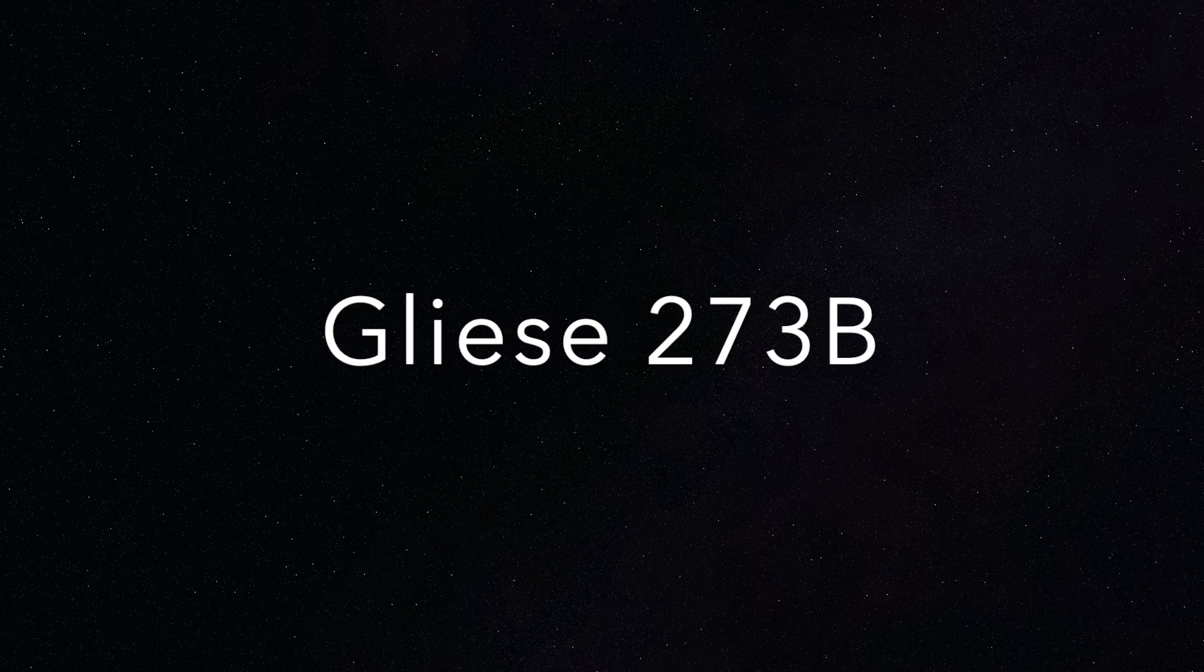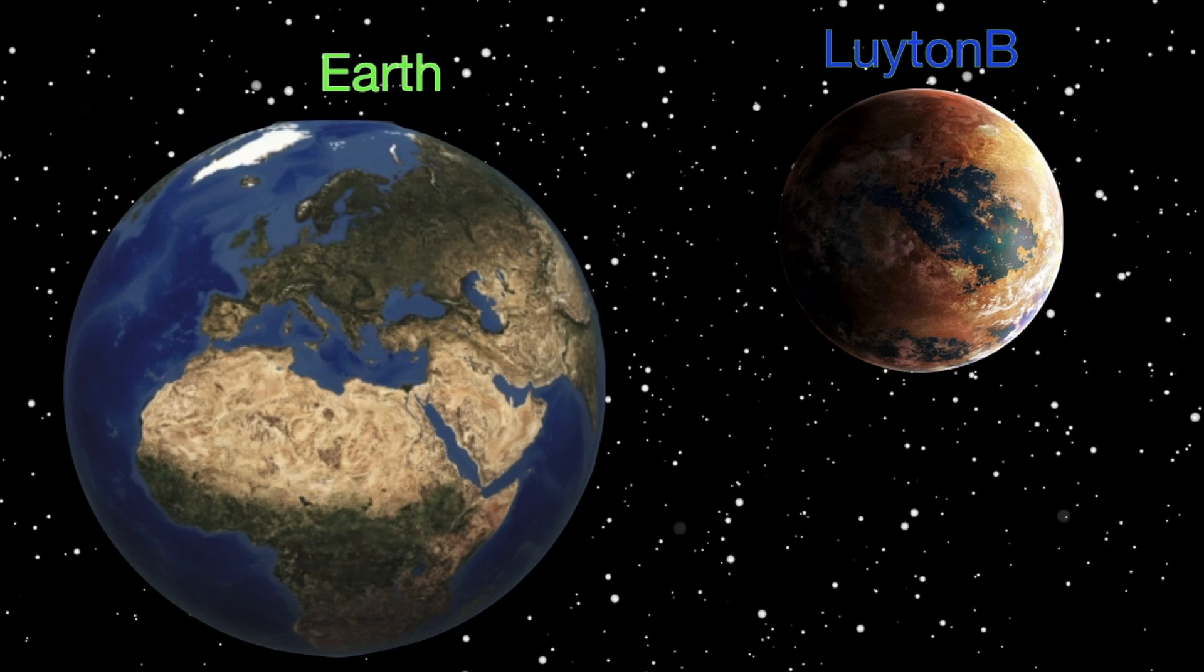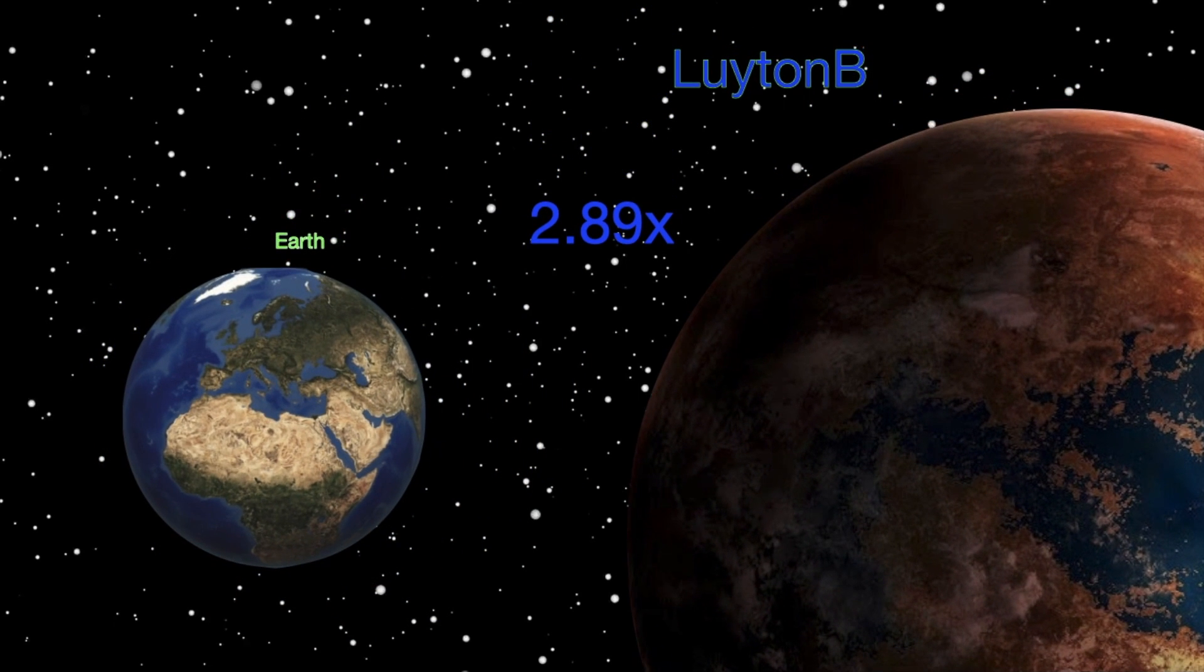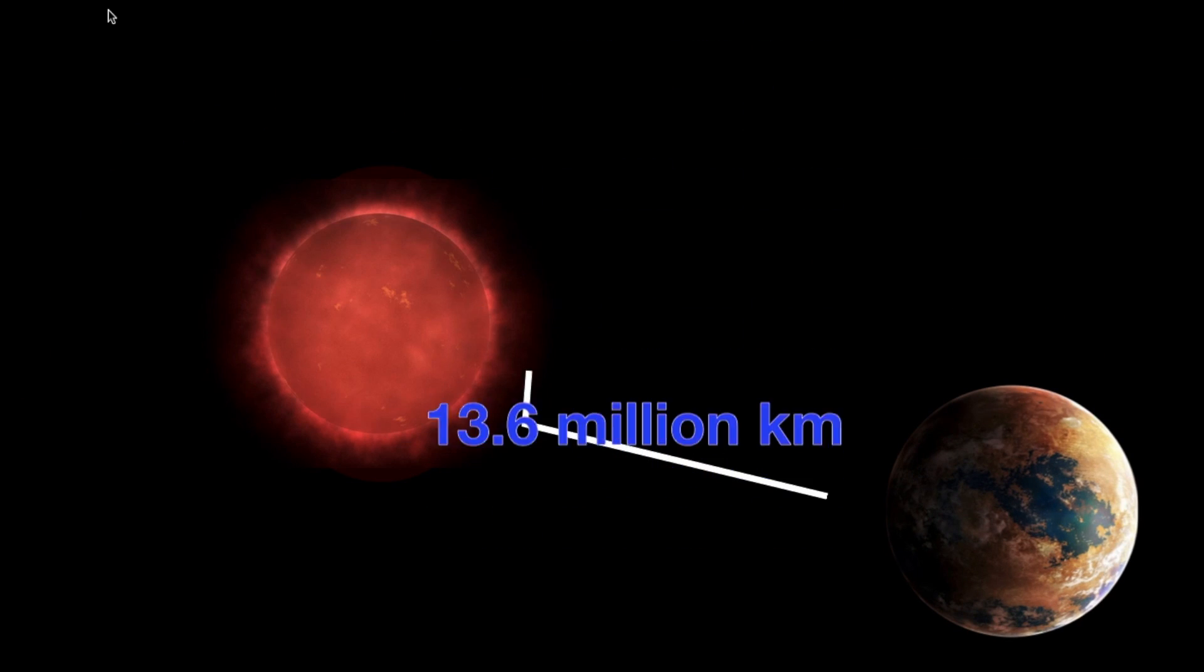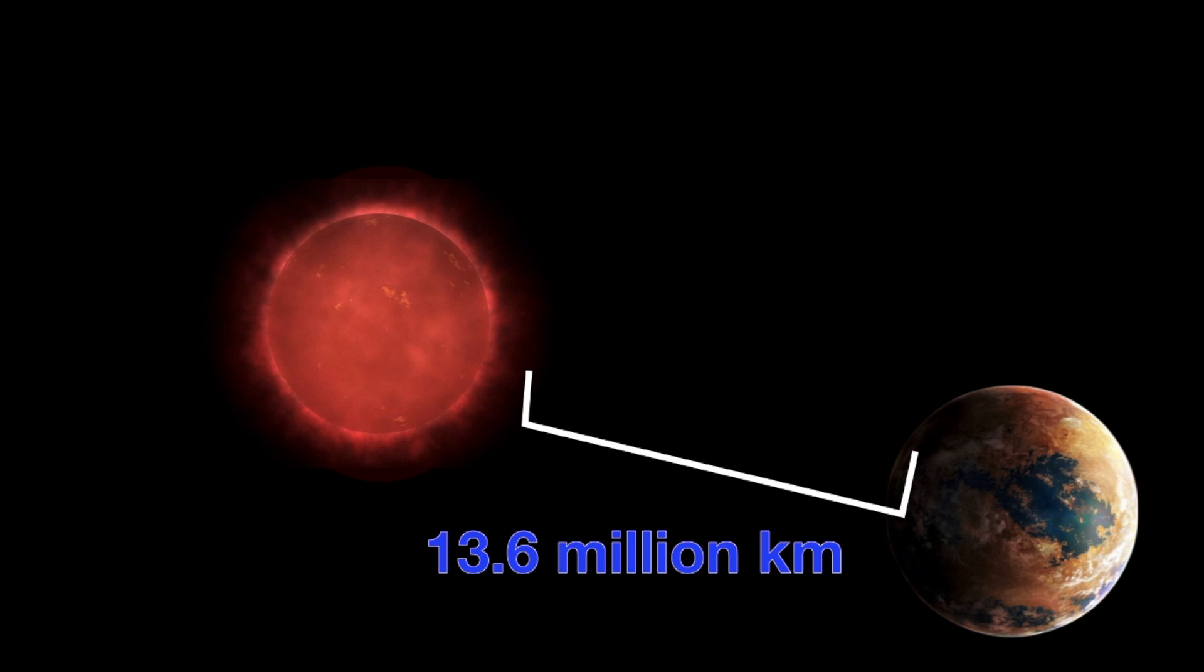Last and finally, we have Lighten b, also known as Gliese 273b. It is about 12.2 light years from Earth, and is about 2.89 times the size of the Earth. It orbits its star at a distance of 13.6 million kilometers.